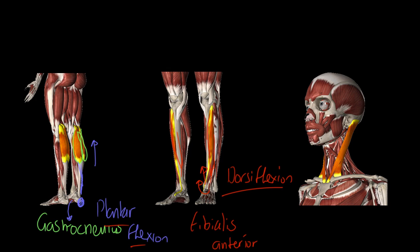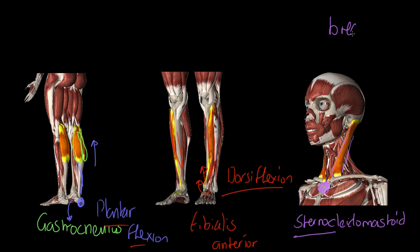The last muscle is this neck muscle here — this is called the sternocleidomastoid. Notice 'sterno' — it inserts here on the sternum. This is really important because this is a breathing muscle. It is a breathing muscle specifically for inspiration during exercise. It pulls upward to further lift the sternum, the ribs, and the thoracic cavity so that we can breathe in more deeply.